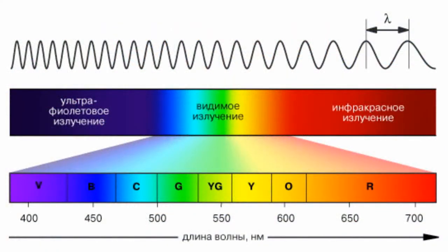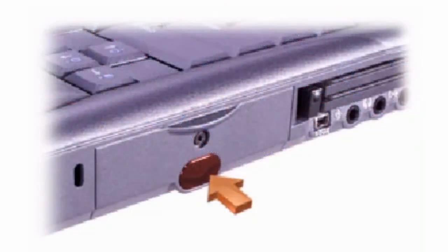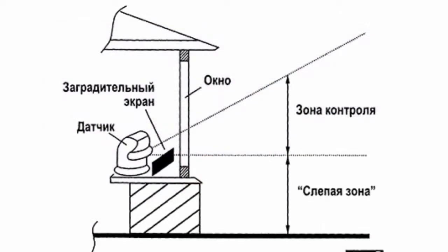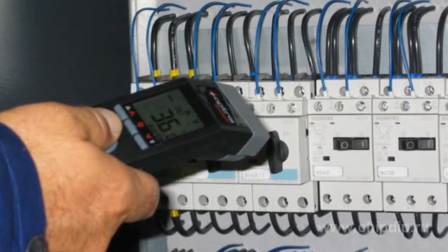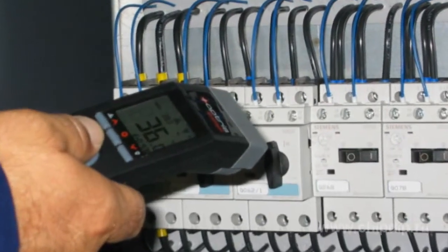In non-contact sensors, the principle of measuring the power of the infrared radiation emitted by each object is used. Infrared radiation with a wavelength from 3 to 14 microns falls on the detector element of the temperature sensor. Then it is converted into an electrical signal proportional to the power of infrared radiation. This signal can then be digitized.